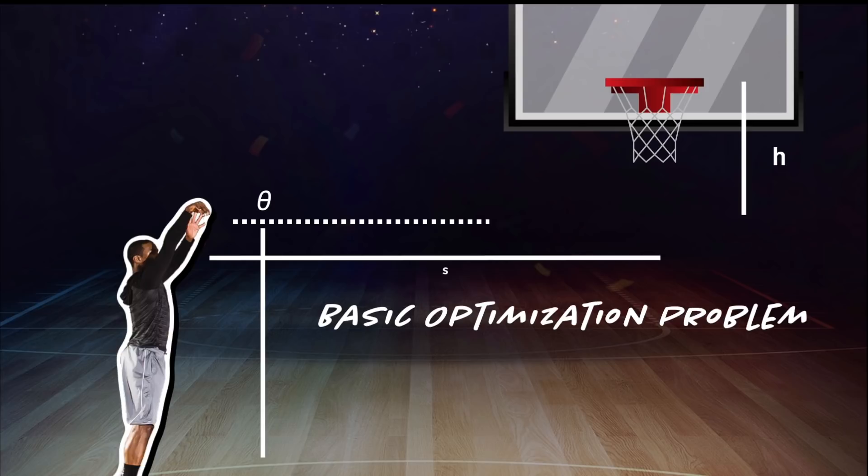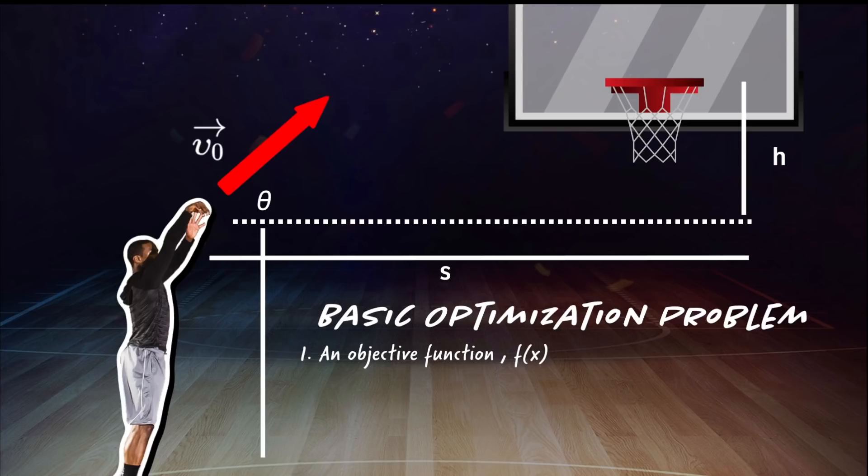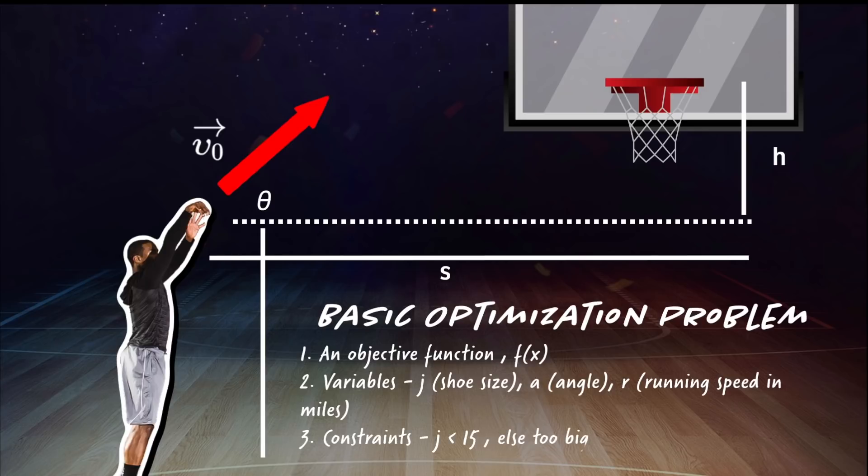A basic optimization problem consists of three core ideas. First, a function. Let's call it f of x. We want to maximize or minimize the output of this function. That's our goal or objective, so let's call it an objective function. Secondly, we can't control the output, but we can control the inputs. These are our variables. There could be one or many, depending on the use case. Lastly, there are usually some kind of constraints on our objective. These place limits on how big or small some variables can get.